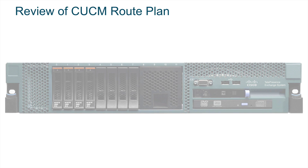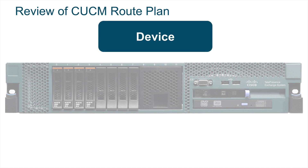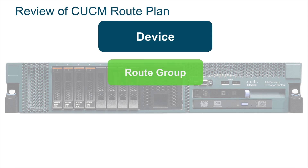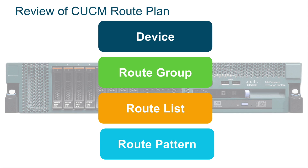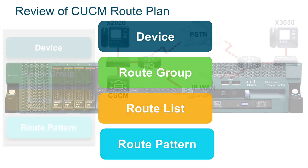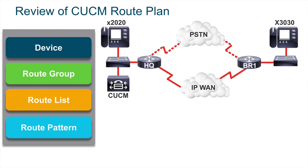We'll also review a traditional route plan in Cisco Unified Communications Manager. I use the acronym DGLP: D is device, G is route group, L is route list, and P is route pattern. We create a device like a gateway or trunk, put that device or collection of devices into a route group, then put one or more route groups into a route list, and point to a route list with a route pattern. For example, I've got two ways to get from the network on the left to the network on the right — I'm calling from 2020 to 3030. I could go over the PSTN or over the IP-WAN. I prefer the IP-WAN — free long distance. Let's use the WAN if it's available.